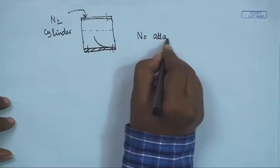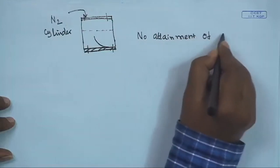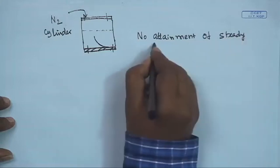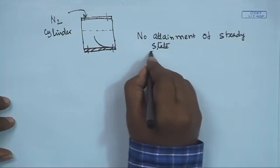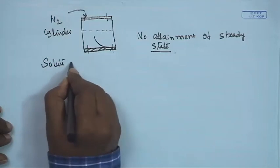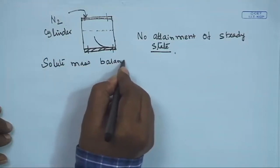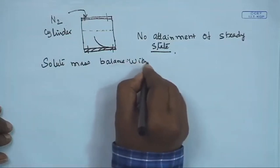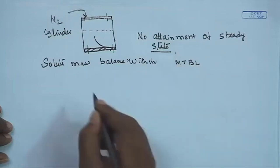But in the case of the unstirred batch cell, there is no external agent to arrest the growth of the boundary layer. Hence it will grow undisturbed, and the permeate flux will keep on decreasing as a function of time while the permeate concentration will keep on increasing as a function of time. There will be no attainment of steady state — unlike cross flow filtration, that is the typical characteristic of a batch cell. Next, we will write down the solute mass balance within the mass transfer boundary layer.